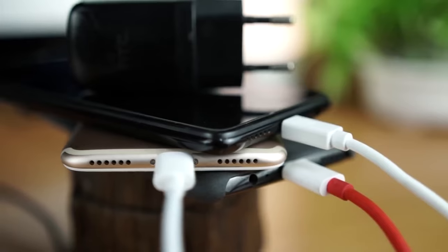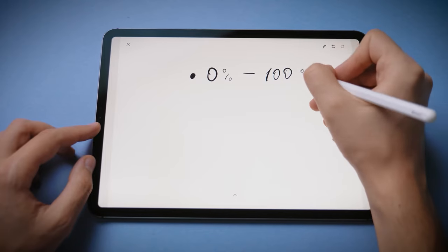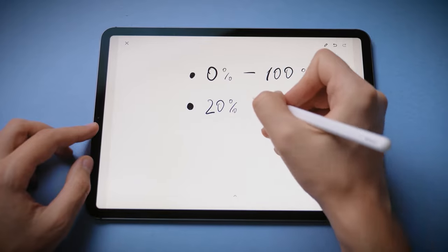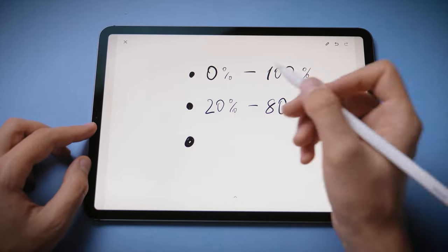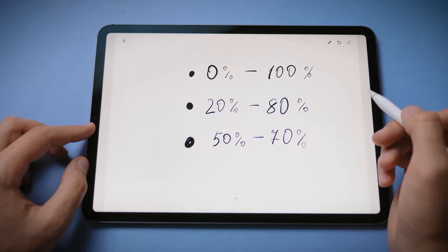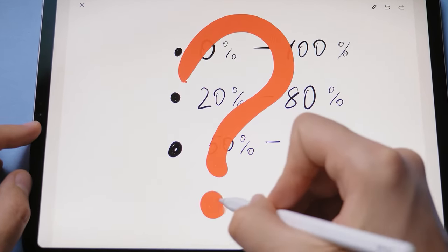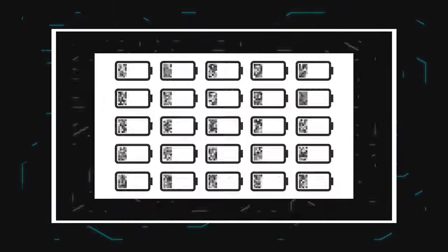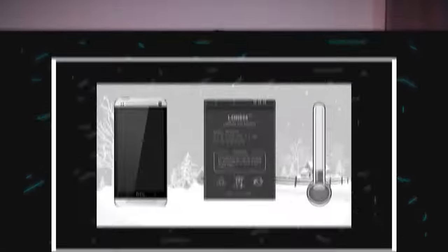The web is full of contradictory information. Someone recommends putting smartphones on charge at night. Some people say to charge only up to 80%. And some, imagine this, generally charge 5-10% several times during the day and store the battery in the refrigerator. How harmful is fast charging? And in general, there are lots of questions.